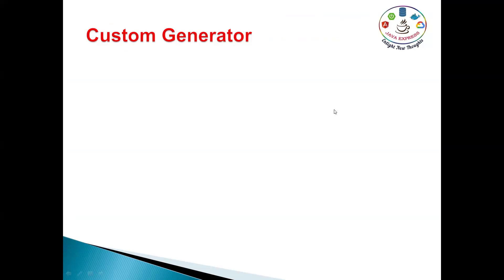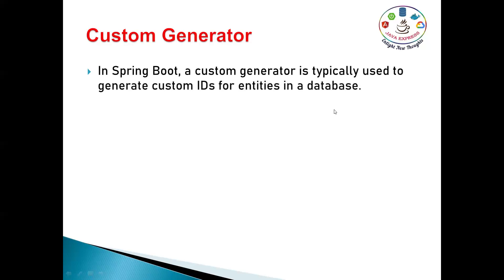In terms of custom generator, we have a requirement like whenever you book an order, 'order' is the prefix — ORD — and you want to add a suffix prefix. In those use cases, this custom key generator will work. It is a kind of alphanumeric primary key generator where it contains alphabet letters, numbers, and special characters like underscore. In a Spring Boot application, a custom generator is typically used to generate custom IDs for entities in a database.